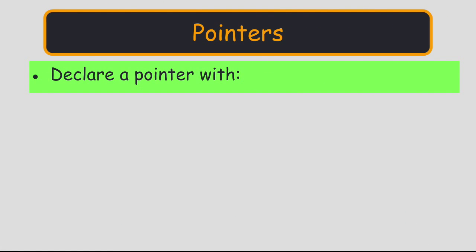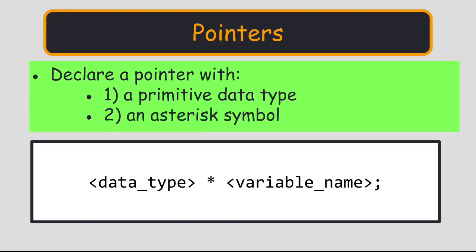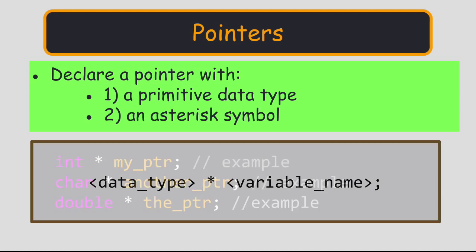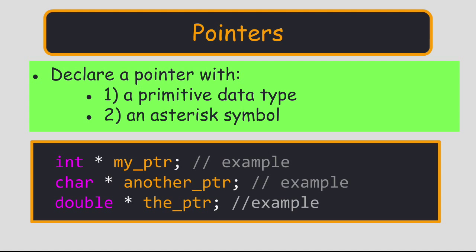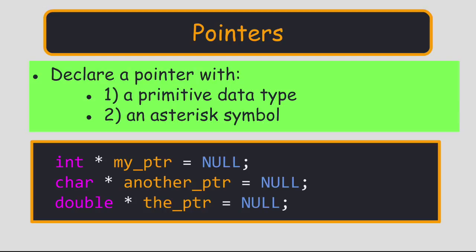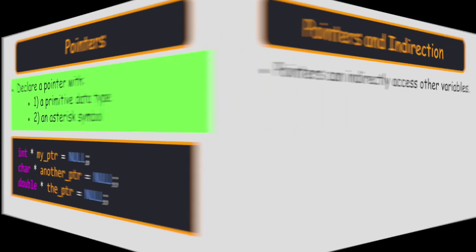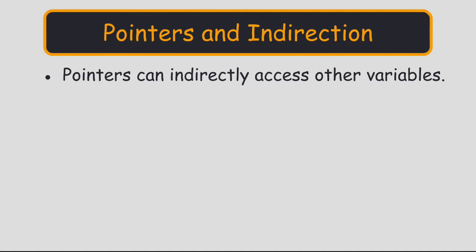To declare a pointer, we use the primitive data type for our destination variable, followed by an asterisk. The primitive data type plus the asterisk form the pointer data type. The pointer variable will be used for storing memory addresses of variables that correspond with the pointer's primitive type. When a pointer is first declared, it doesn't contain a memory address. A good practice for initializing pointers is assigning them to null.